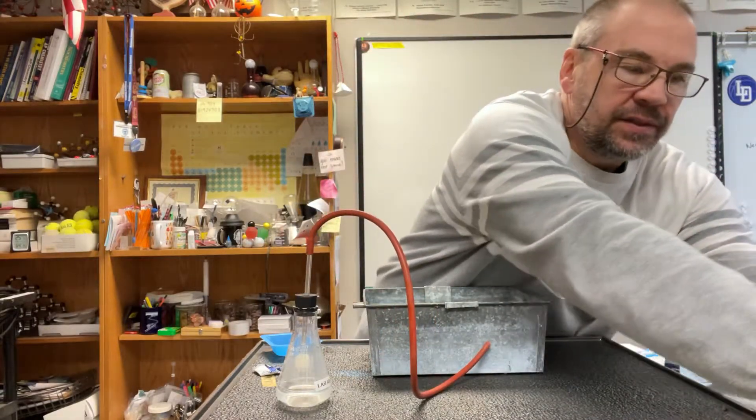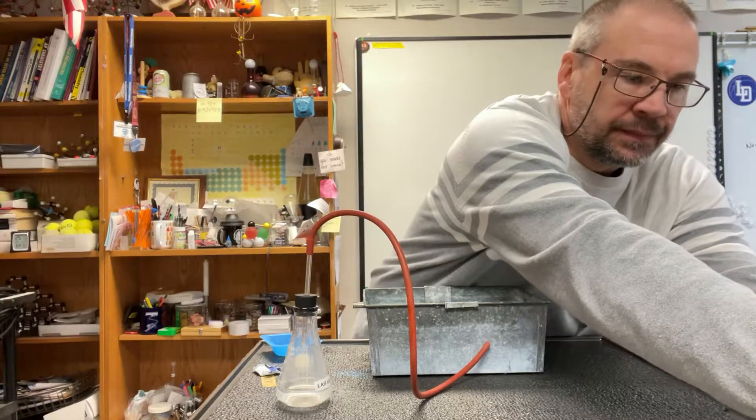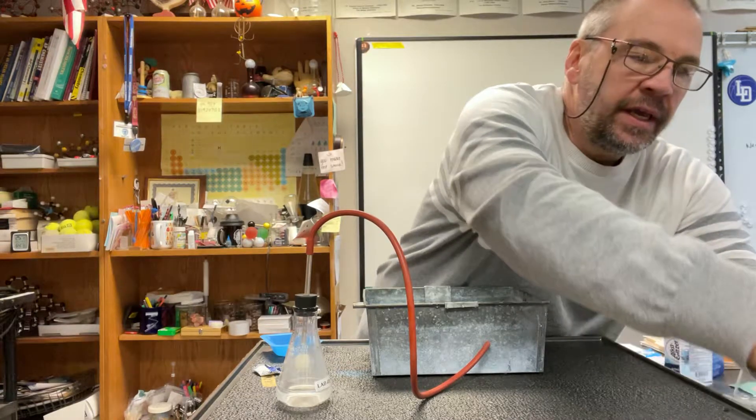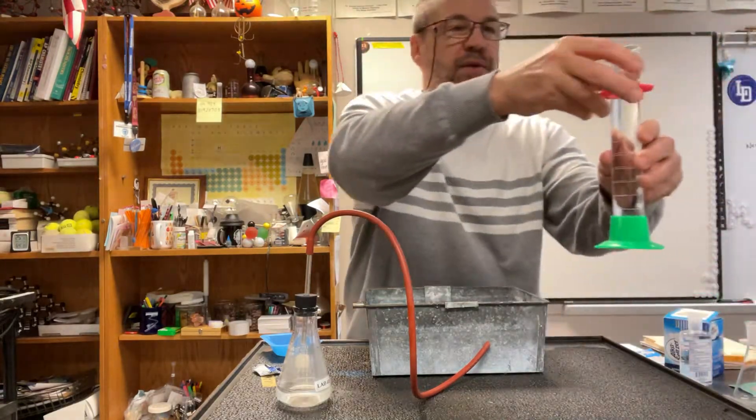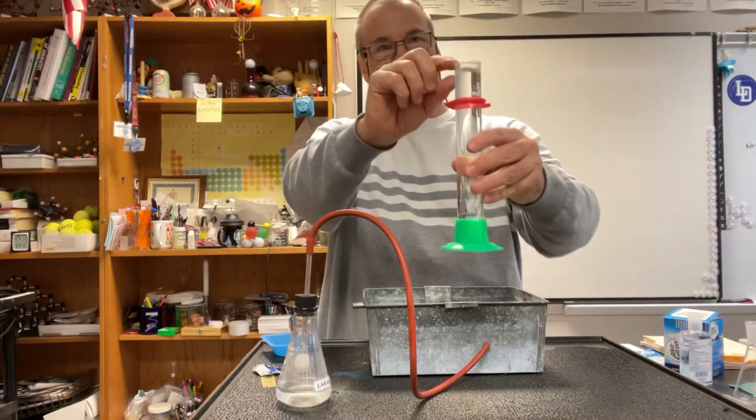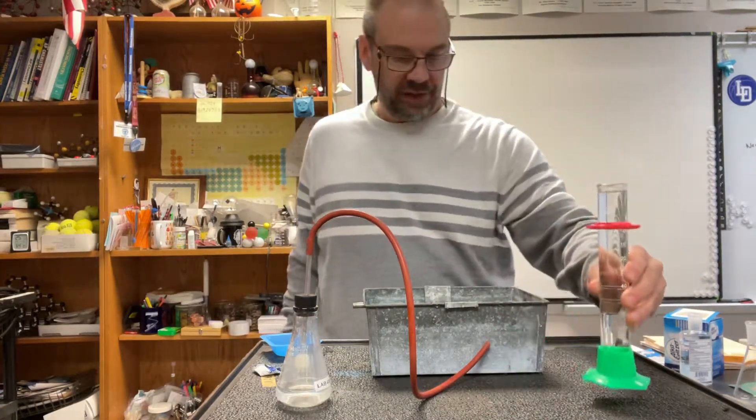The way we're going to do that is we're going to fill up our graduated cylinder with water, and you want to get it not quite to the top. You want to leave a little space there, probably about a quarter inch or so, maybe a half inch.